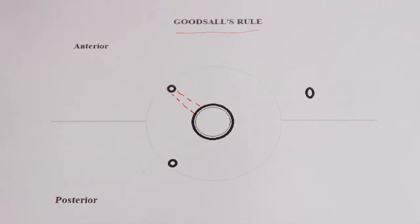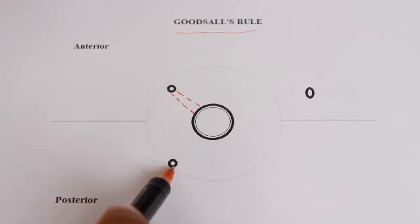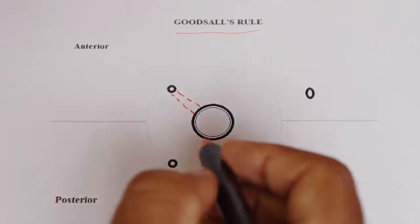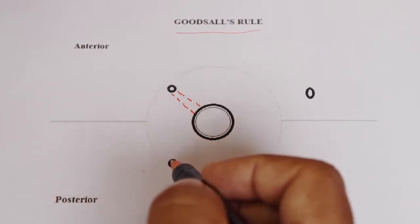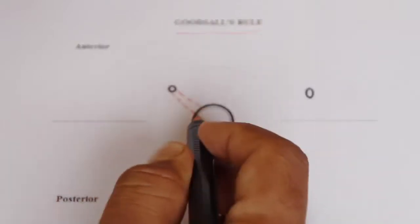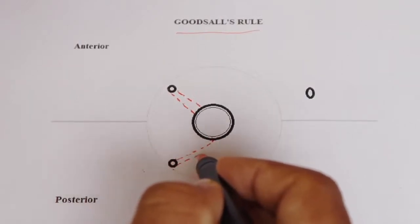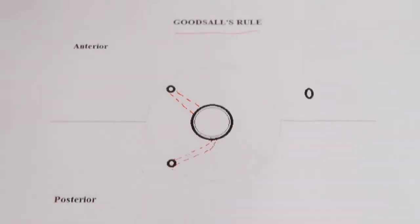If the external opening is situated posterior to that imaginary line, the track will curve and the internal opening will be in the posterior midline of the anal canal. So when the external opening is on the posterior side, the track is not radial or straight — it will be curved, and it opens in the posterior midline of the anal canal.